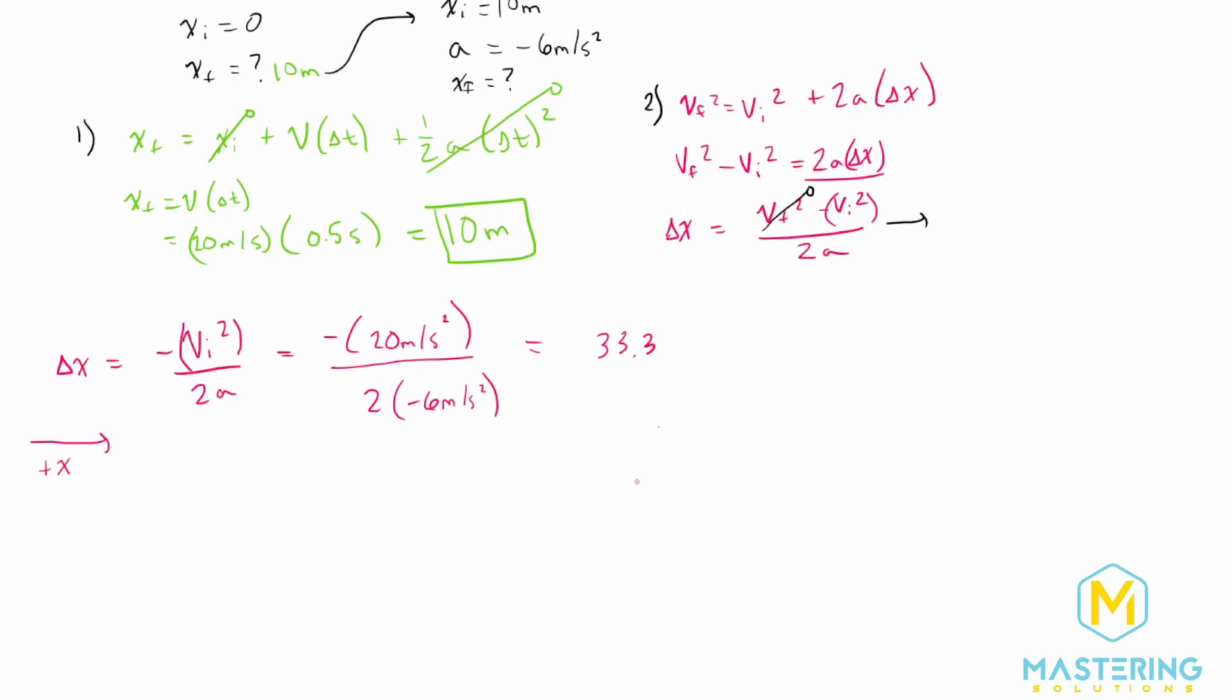But this doesn't account for this 10 that we already went. So when we add the two sections together, 10 meters from the first one, plus 33.3 meters for the second section when she is slowing, gives us a total distance of her slowing down of 43 meters.